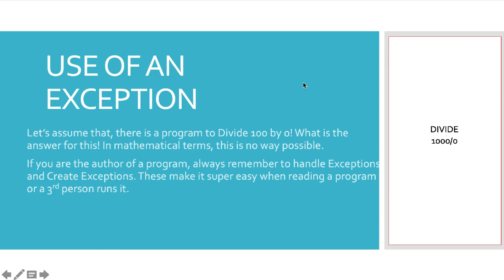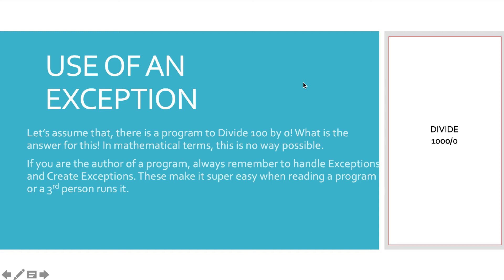Just like dividing by zero, consider multiplying 1000 by infinity — that's also not possible. All of these are going to result in an exception which the program throws during runtime, to let the user know that there has been a flow in the program that cannot be handled by Dart.